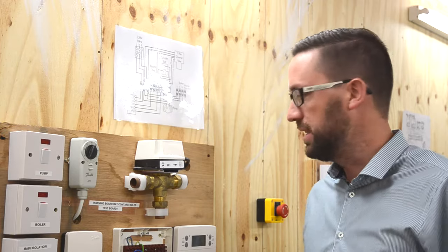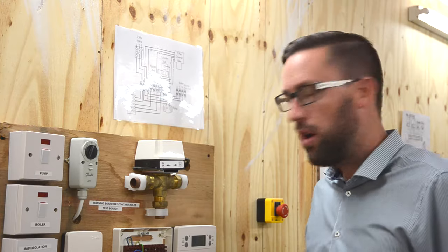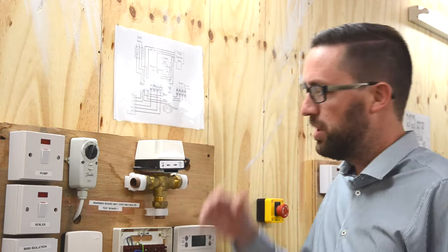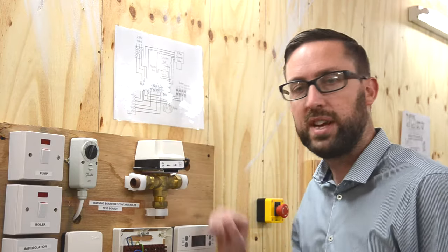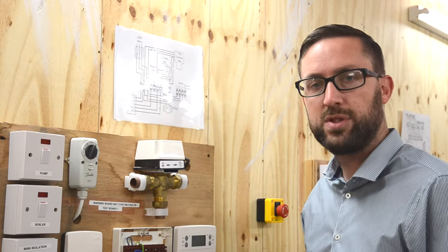Now what could happen is you could have a three-port valve like this in the airing cupboard. If you have one, over time the valve can get a lot of muck inside it. When the heating comes on, this motor has to motor the valve right the way open for the heating to work. Because of the muck, the motor is not powerful enough to open it right up.